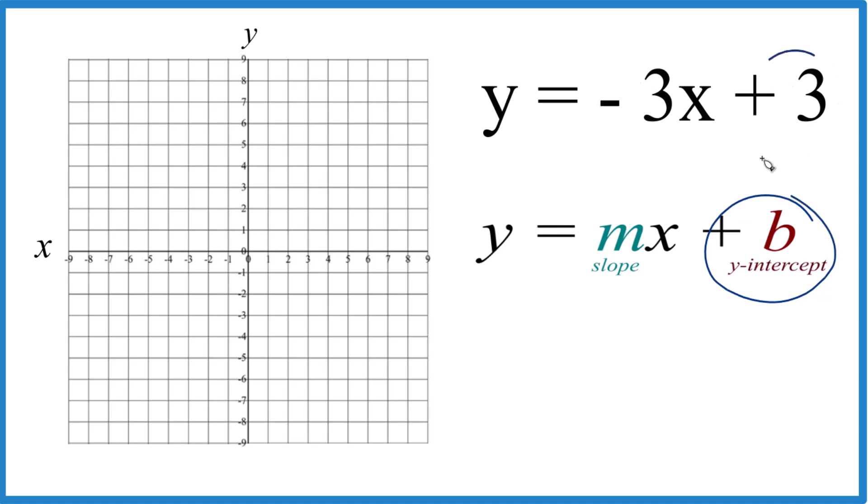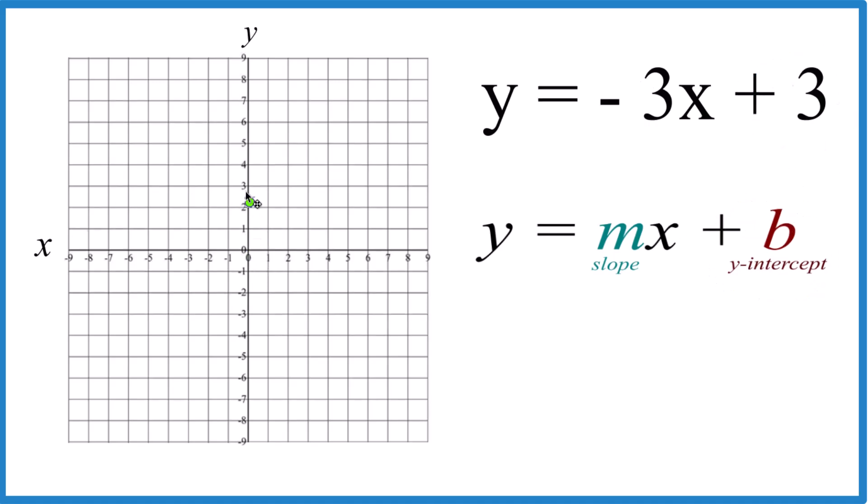So we start out here the y-intercept, that's 3. So we go to the y-axis, and we find 3. That's where we're going to cross the y-axis.